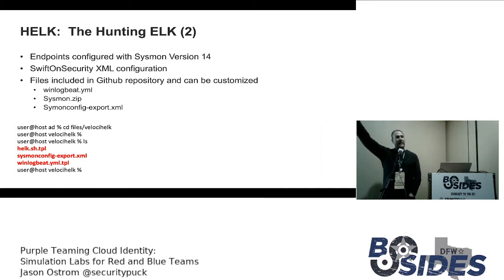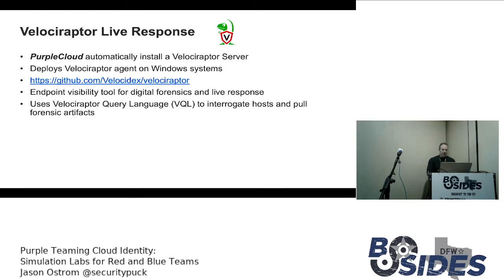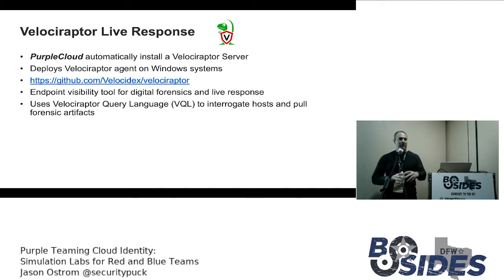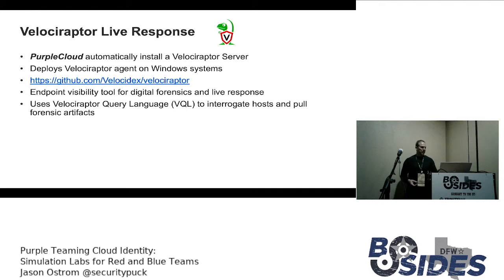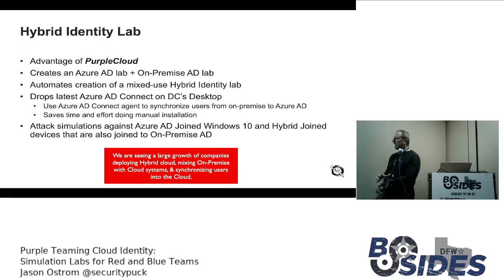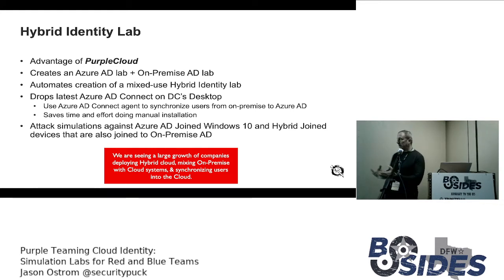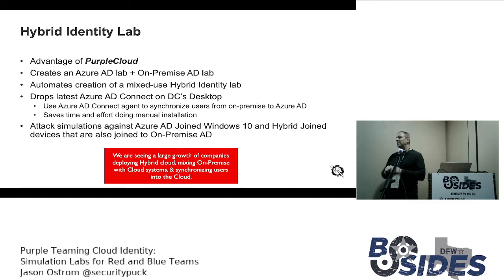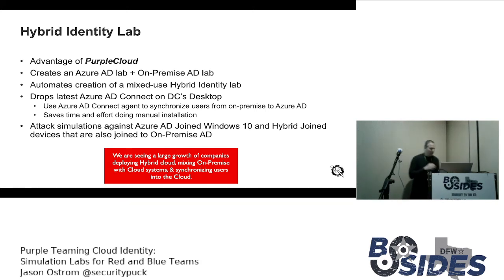For hybrid identity, it drops the latest Azure AD Connect onto the domain controller desktop. If you want to research vulnerabilities on Azure AD Connect in a hybrid deployment, it takes a long time to manually configure this every time. You use the AD generator and the Azure AD generator to create your hybrid environment, then just double-click the Azure AD Connect MSI to bridge the two together — everything's already downloaded for you.